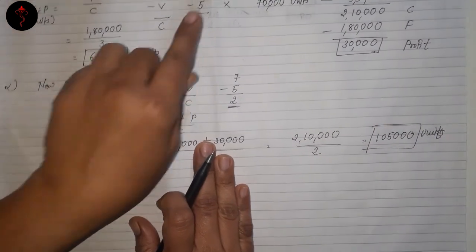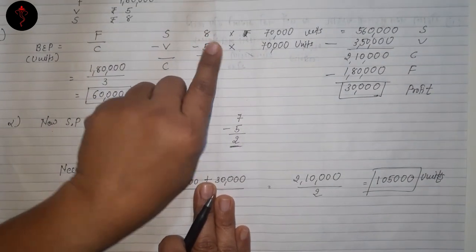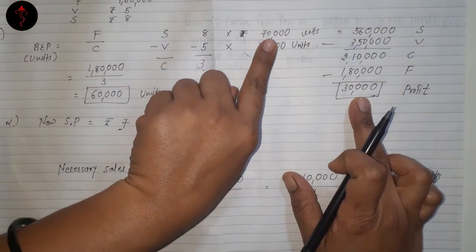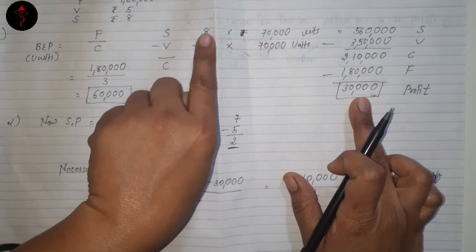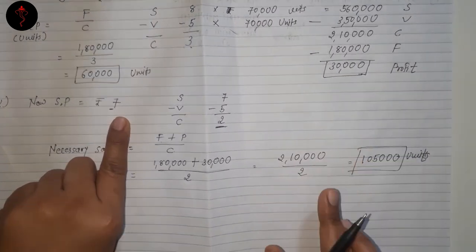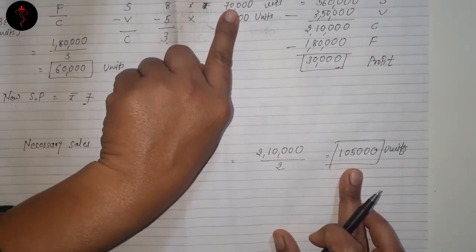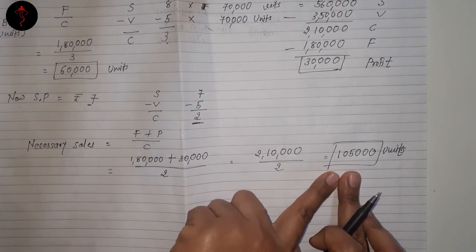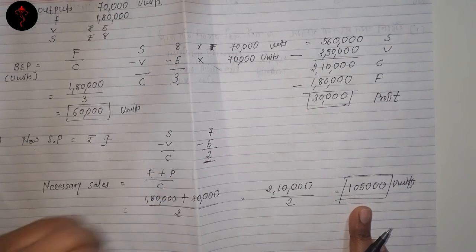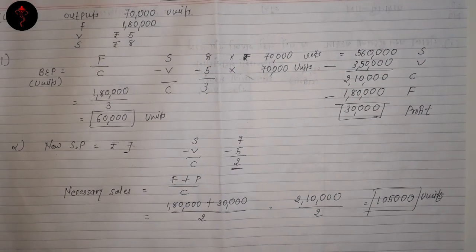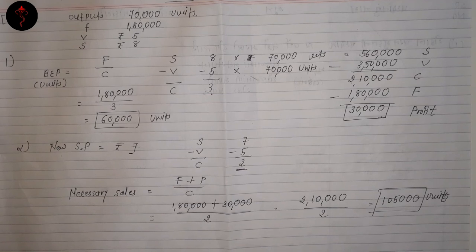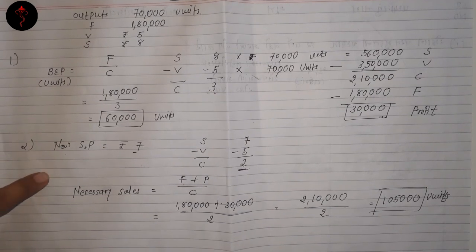So if selling price is Rs. 8, break-even is 60,000 units; if selling price drops to Rs. 7, you need 1,05,000 units to earn the same Rs. 30,000 profit because the selling price is Rs. 1 less. This is sum number 4. Short sums are done. Next lecture will be lecture number 3 — one is for the formula, the second is for the short sum, and the third lecture will have a long sum. Okay students, bye. Thank you.